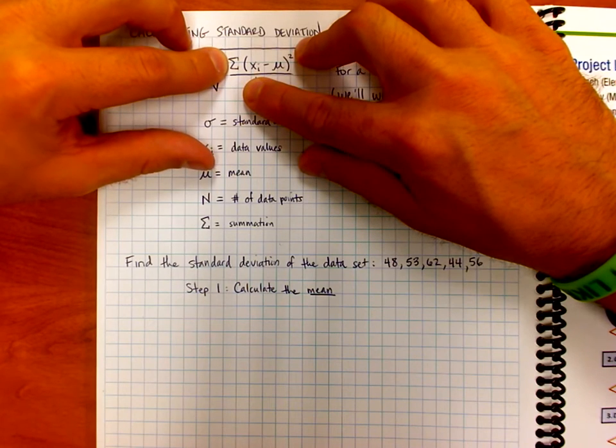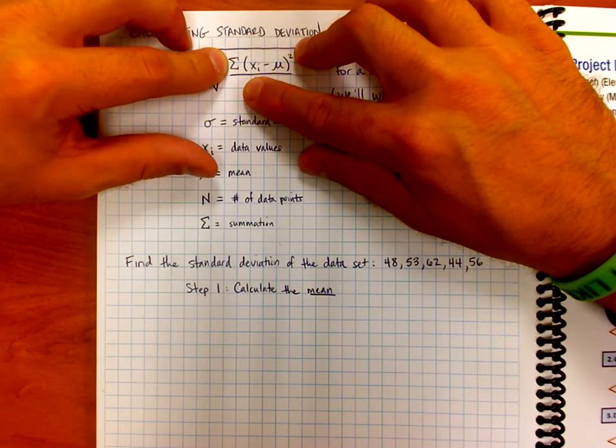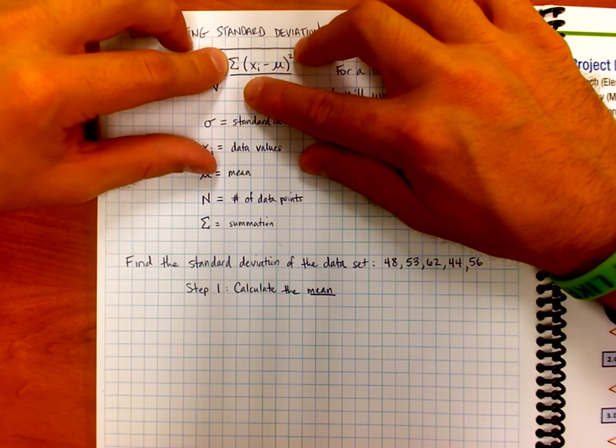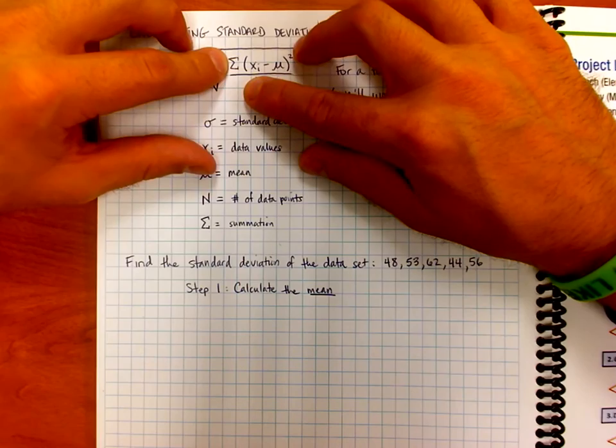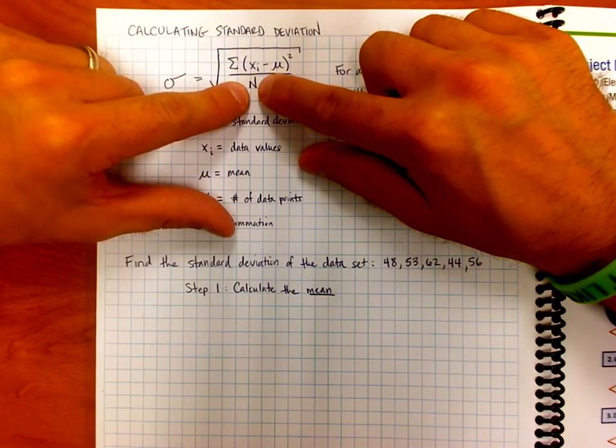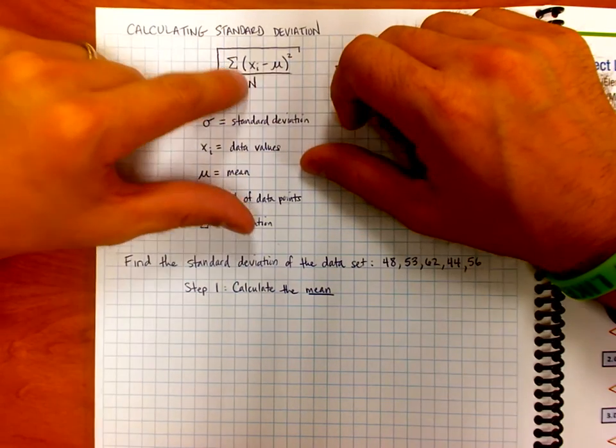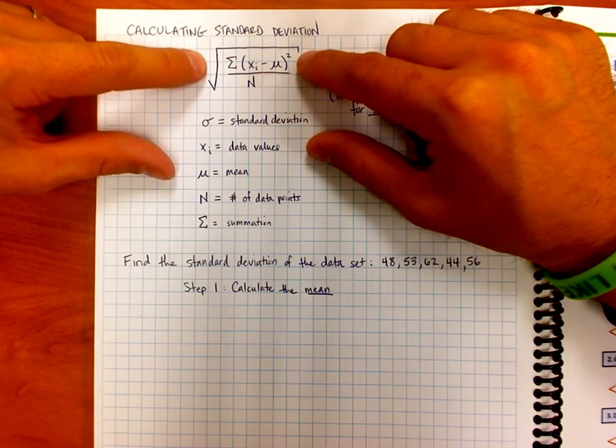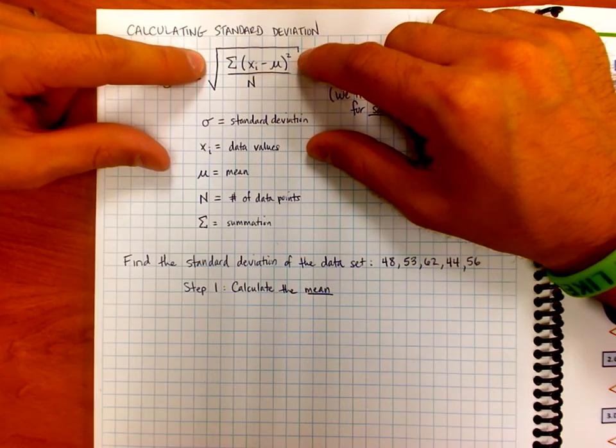So this means the addition of a bunch of different data points. Once we have the addition of all those values, the sum of all those values, we're going to take it and we're going to divide it kind of like you do with an average. We're going to divide it by how many numbers we have. And once you get that total, all that stuff on the inside of the square root, we take the square root at the very end. So that's kind of our process.